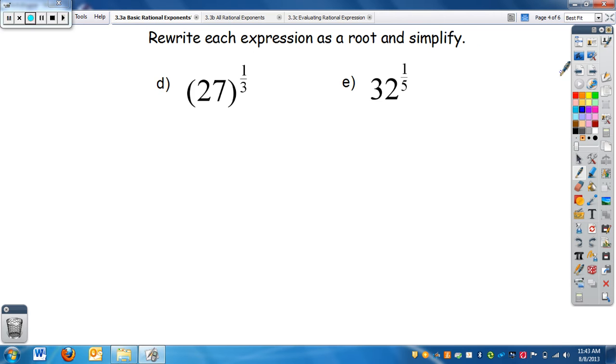We're going to rewrite the expressions as a root and then simplify, so we're going to rewrite it into something we're more familiar with and simplify it from there. So if I have 27 to the one-third, if I want to write this as a root, I need my index. The index is the denominator of the exponent, which is three.